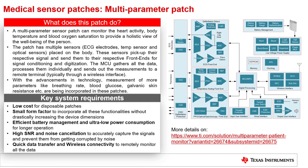The key system requirements for multi-parameter sensor modules are: low cost for disposable patches; small form factor to incorporate all functionalities without drastically increasing device dimensions; efficient battery management and ultra-low power consumption for longer operation; high SNR and noise cancellation to accurately capture signals and prevent corruption by noise; and quick data transfer and wireless connectivity to remotely monitor all the data. A common block diagram for a multi-parameter patch is also shown.